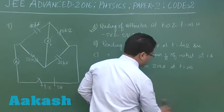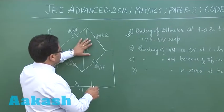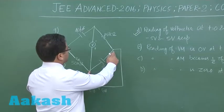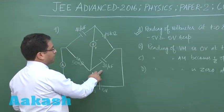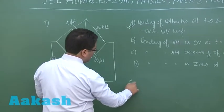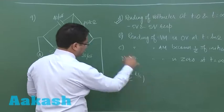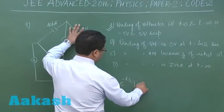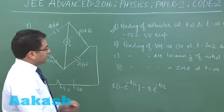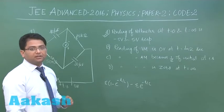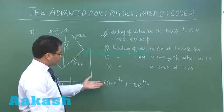For option B, the reading of the voltmeter is 0 at t = ln 2 seconds. The voltmeter reads the open-circuit potential difference, which is the potential difference across C1, R1 minus the potential difference across R2, C2. That gives E(1 − e^(−t/τ)) minus E·e^(−t/τ), where τ = 1 s for both circuits. Substituting t = ln 2 gives exactly 0. So the values are beautifully placed and option B is also correct.